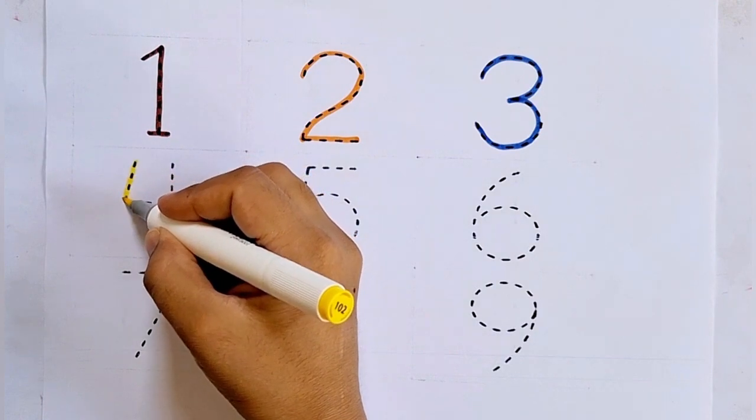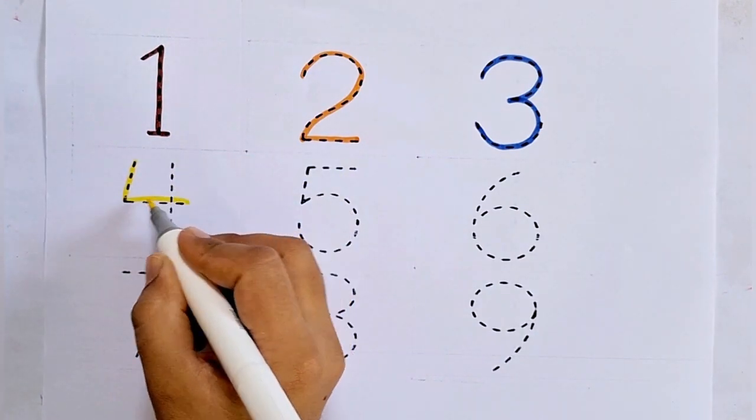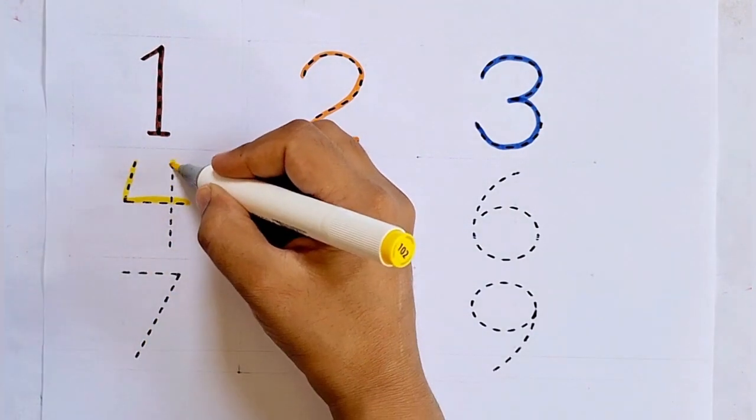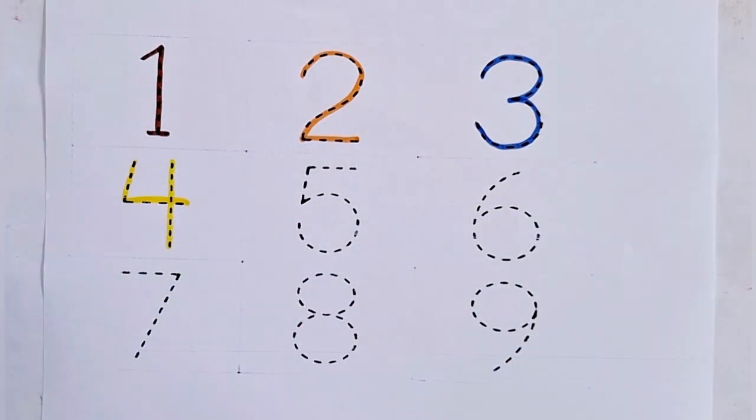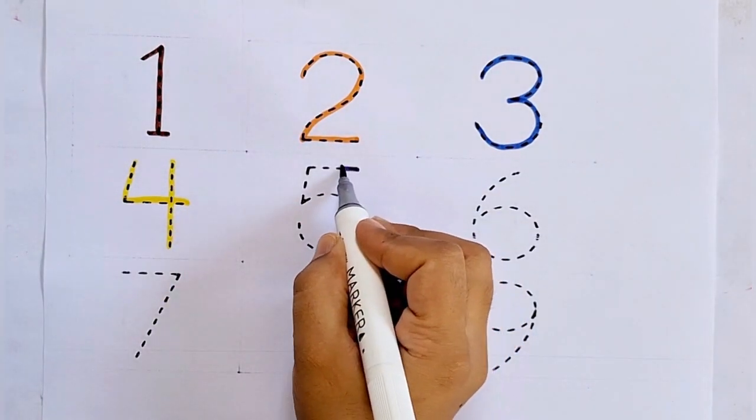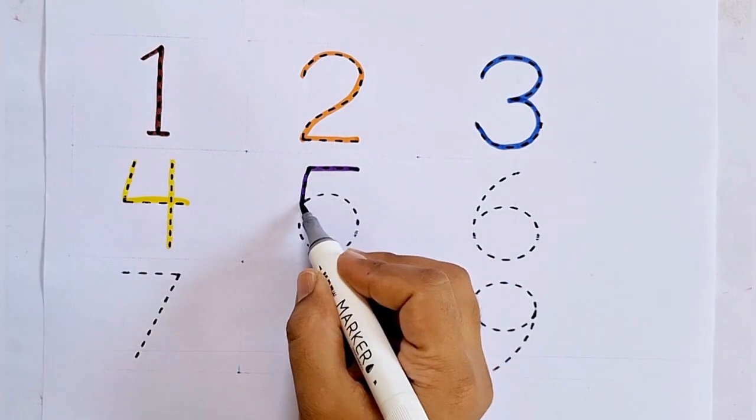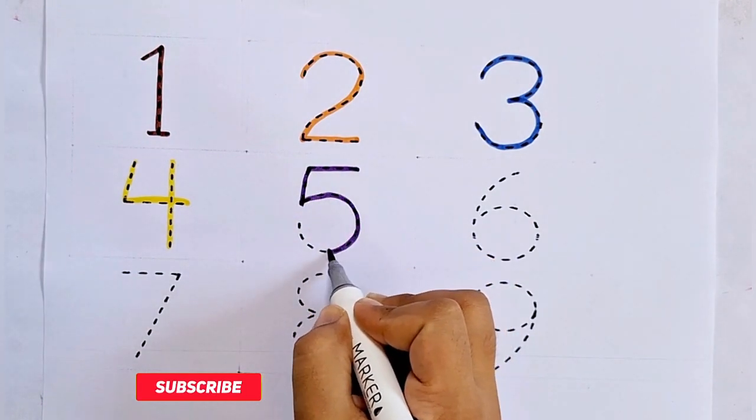Four, this is four. After three comes four. Five, this is five. After four comes five.